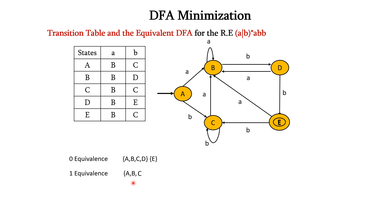Next, we can compare ABC with D. So, we can go for either AD, BD, or CD. Let us go for CD. If we check for CD on input A and B, it is BC and BE. So, we have BCE. BC is available but E is not available. So, we can say that ABC is not equivalent to D. So, we can represent ABC as one set, D as one set, and E as a separate set.